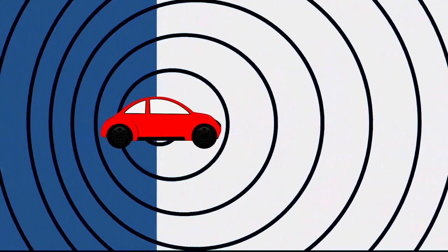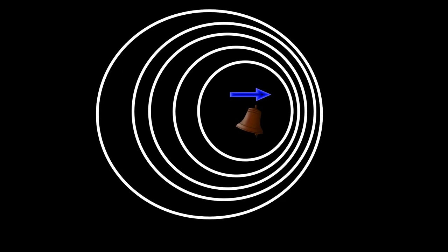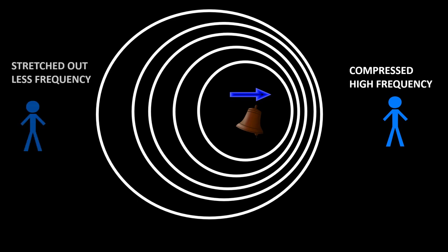In other words, it is the change in frequency of any kind of sound or light wave produced by a moving object with respect to an observer. Waves emitted by an object travelling towards an observer get compressed, prompting a higher frequency as the source approaches the observer. In contrast, waves emitted by a source travelling away from an observer get stretched out.